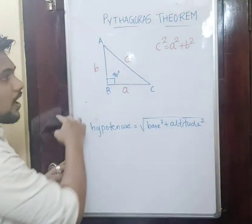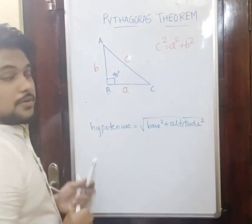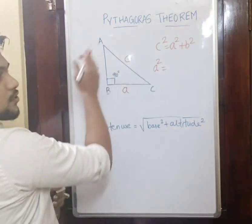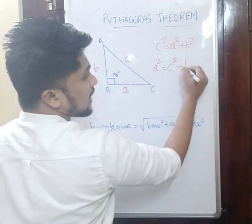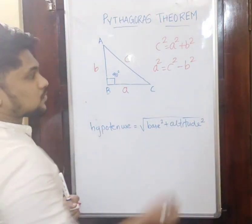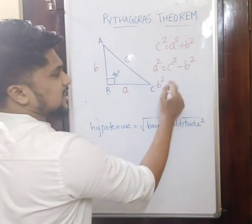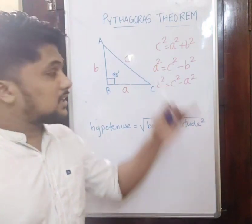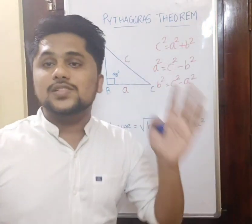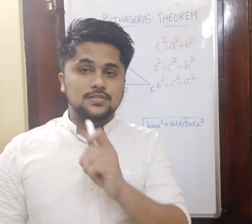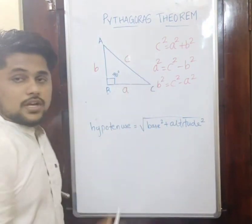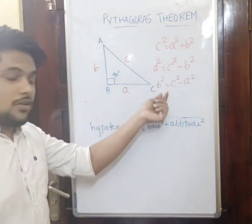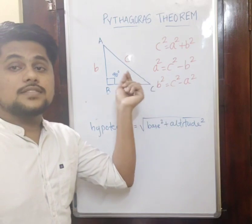Similarly, we can rearrange the equation. A squared is equal to C squared minus B squared — that is, base squared equals hypotenuse squared minus altitude squared. And B squared is equal to C squared minus A squared — that is, altitude squared equals hypotenuse squared minus base squared. So we have two additional equations from the main equation.